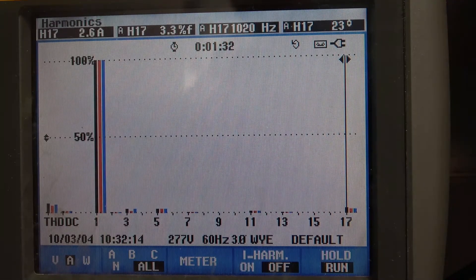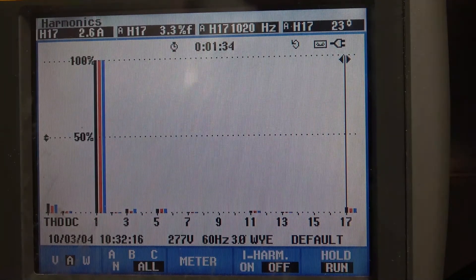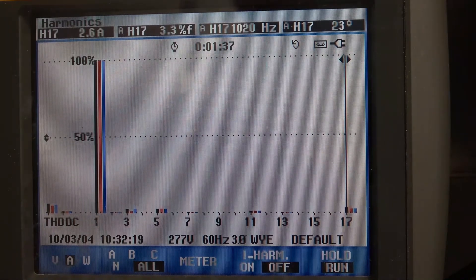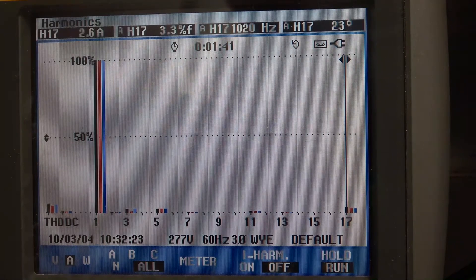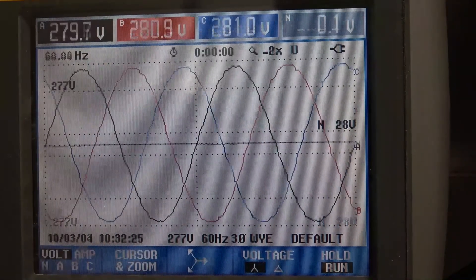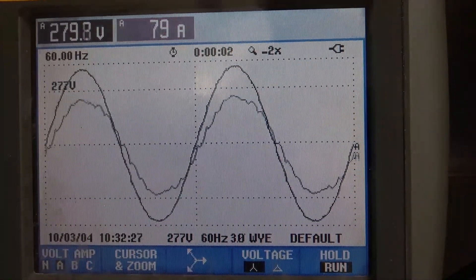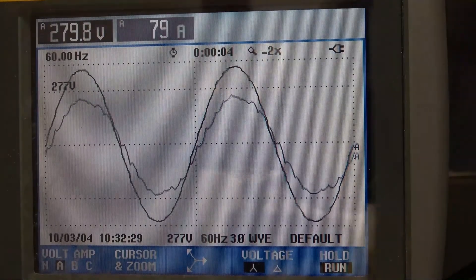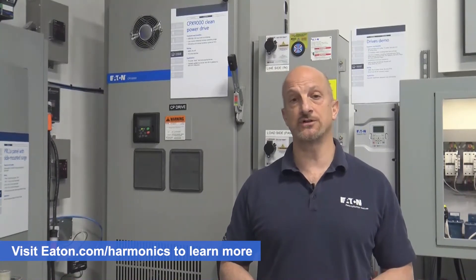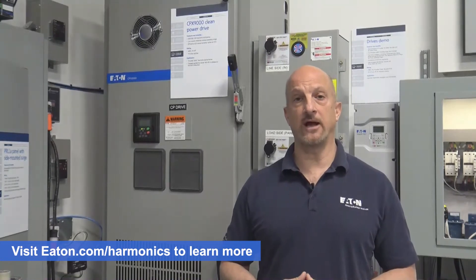This is the important thing to realize with 18 pulse drives and total demand distortion versus total harmonic distortion of what's really important. If we have a drive that's say 150 horsepower or bigger, this is really the right way to go. We have all that filtering and harmonic benefit reduction built into the drive. From a cost standpoint, it's more cost effective than adding additional filters on top of the drive at that size. That's 18 pulse drives, or as we call them, clean power drives.